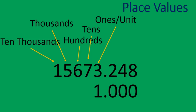The first five place values on the left: the 10,000s, thousands, hundreds, tens, and ones — or the units.